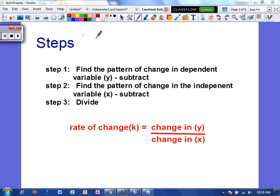Alright, so let's talk about how to actually calculate a rate of change, a constant rate of change, if we are given values. So the first thing that we're going to do is we're going to find the pattern of change in the dependent variable, and that's the y value. And we're just going to subtract and see what the difference is between each one. Then we are going to find the pattern of change in the independent variable, which is x. So we'll subtract between each x value, and then we're going to divide. And whenever we divide, we take the difference in the y and divide it by the difference in the x. And that's really the change in y divided by the change in x.